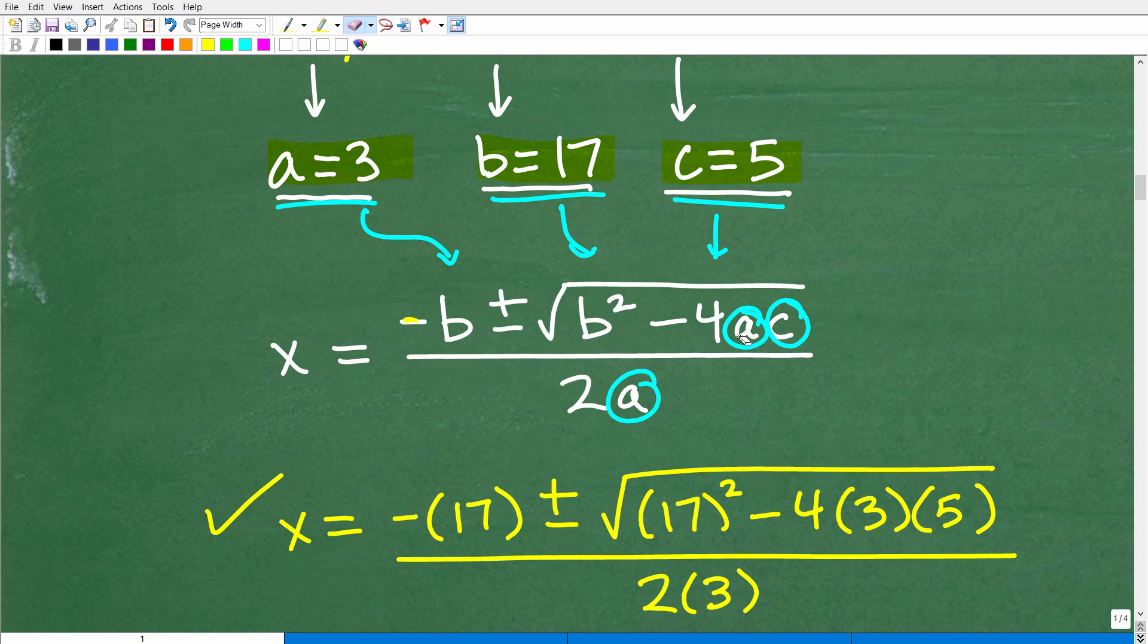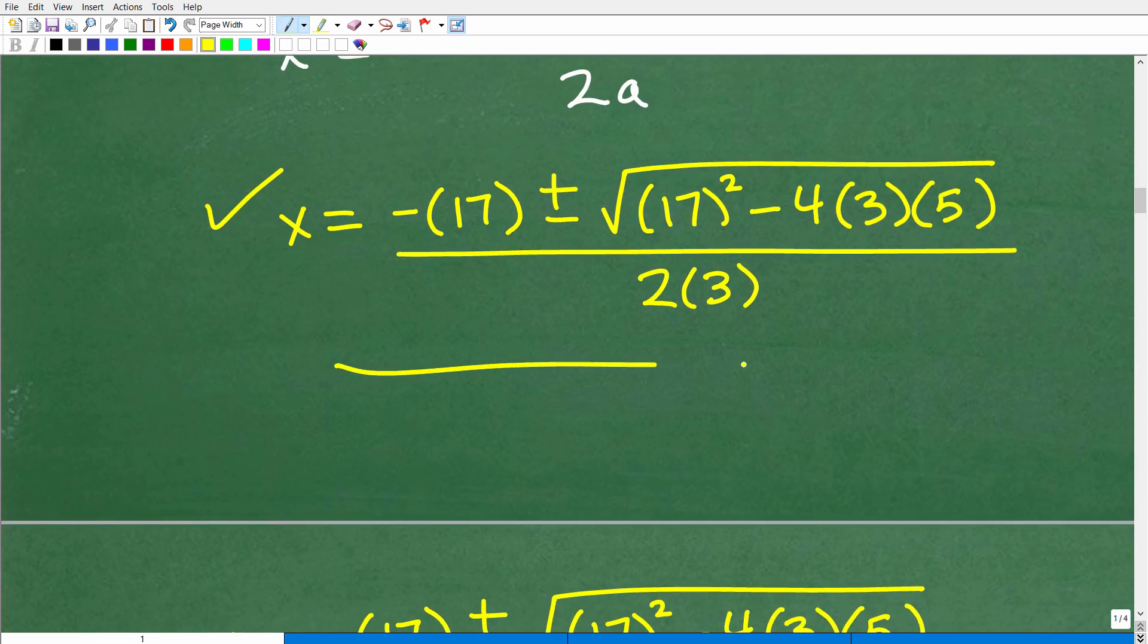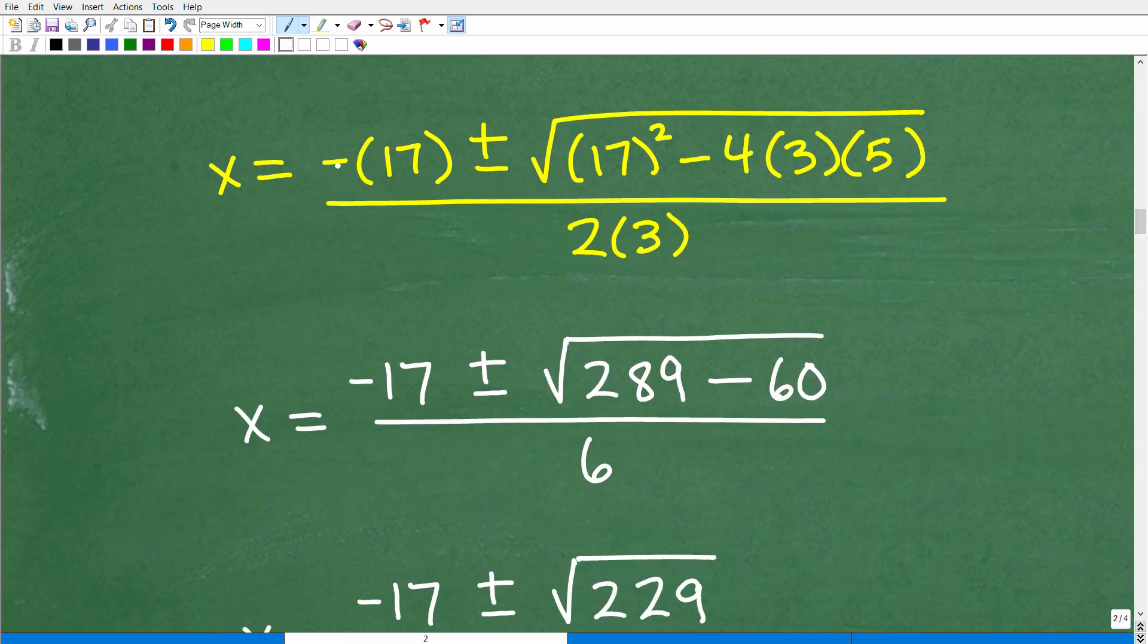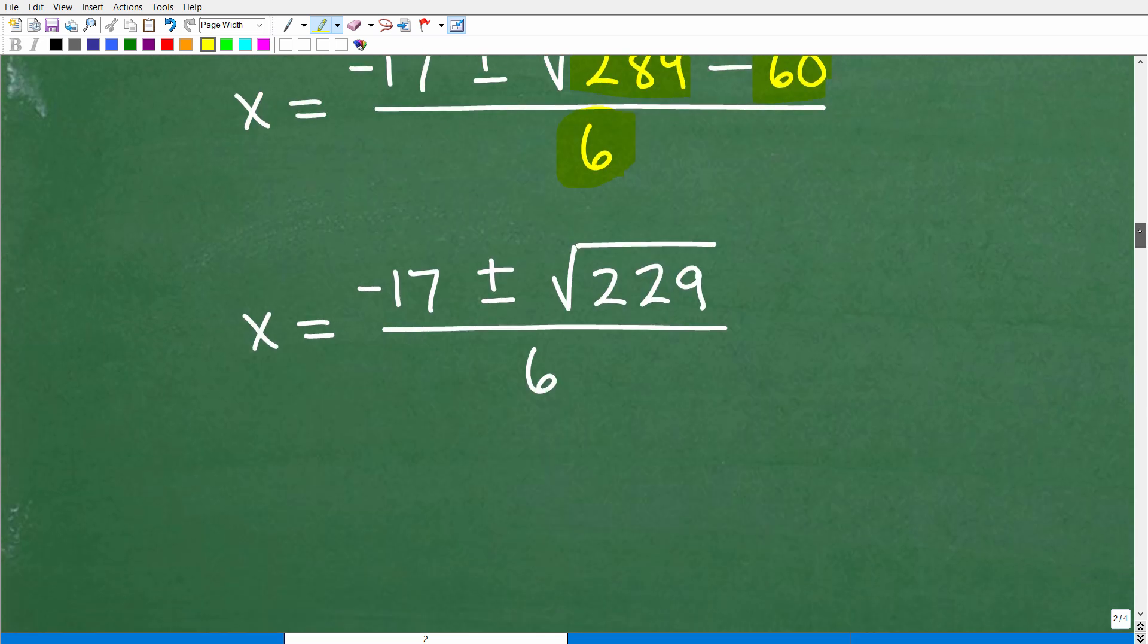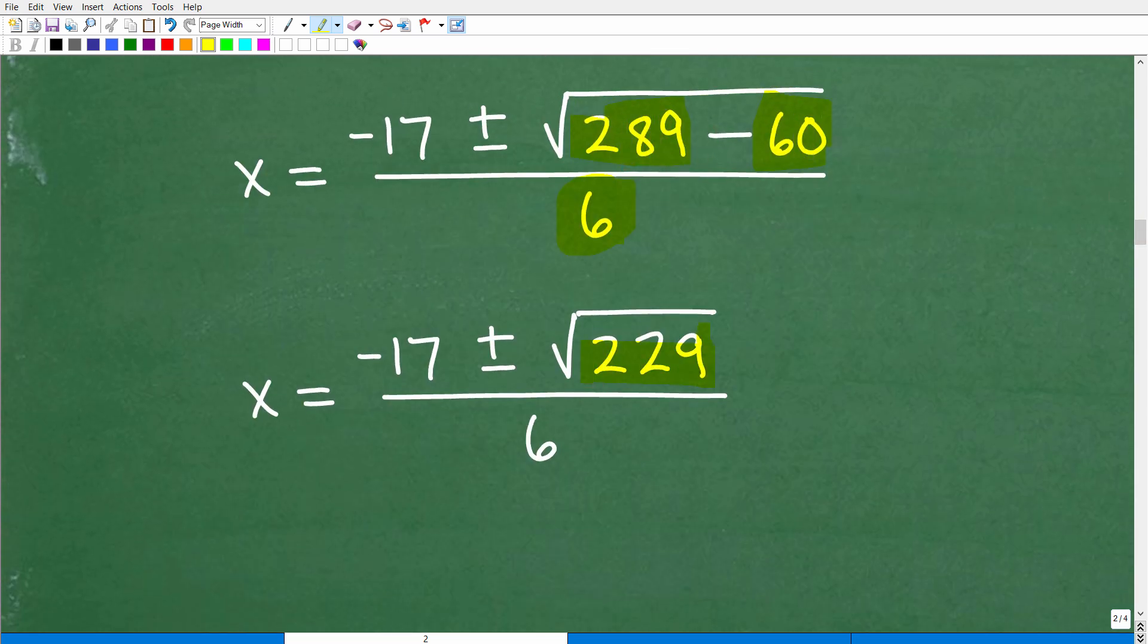So we have minus 17 plus or minus b squared, which of course is 17 squared minus 4 times a, which is 3 times c, which is 5, all over, of course I'm going to be taking a square root of that, all over 2 times a, which is 2 times 3. So now we have to go ahead and tackle all the number crunching here. And feel free to use a calculator to help you out. So here we have minus 17, which is going to be a negative 17 plus or minus 17 squared right here is 289. And then we have 4 times 3 times 5, and you're just looking at this, this will be 60. 5 times 4 is 20, 20 times 3 is 60. So that's 60. And then of course, 2 times 3 down here is going to be 6. So let's go ahead and subtract 60 from 289. We get 229 right there. And we have minus 17 plus or minus the square root of 229 over 6.